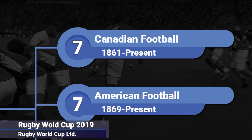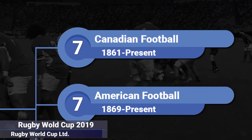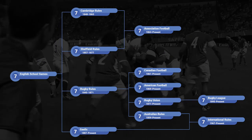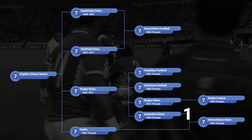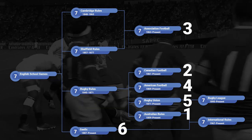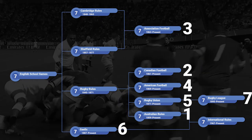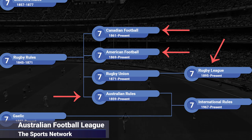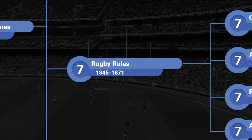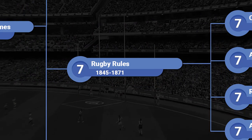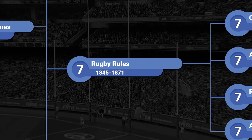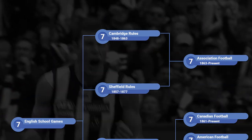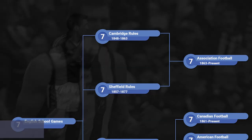However, American and Canadian football, collectively known together as gridiron, are only two of the 7 Codes of Football that are played around the world. These two sports, plus rugby league and Australian football, all developed out of the rugby school's rules of football first codified in 1845. Even association football evolved from athletic games created by individual English schools in the early 1800s.